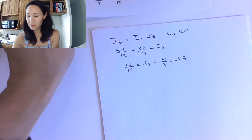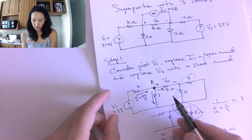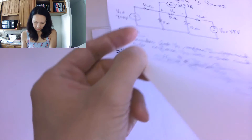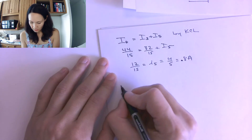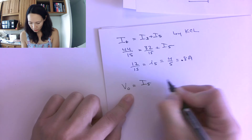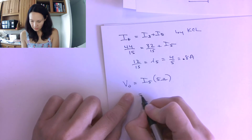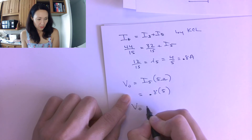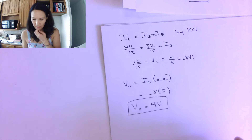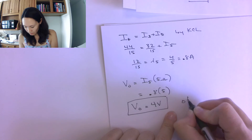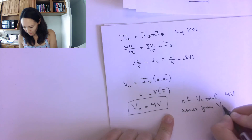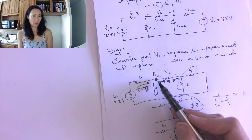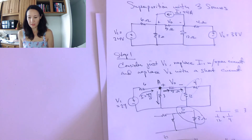Now we know that 0.8 amps is going through the 5 ohm resistor, so we're ready to solve for V0. Using Ohm's Law: V0 = 0.8 × 5 = 4 volts. So of the total V0, 4 volts comes from V1. When we have just V1 in the circuit, it contributes 4 volts to the 5 ohm resistor. That concludes step one.